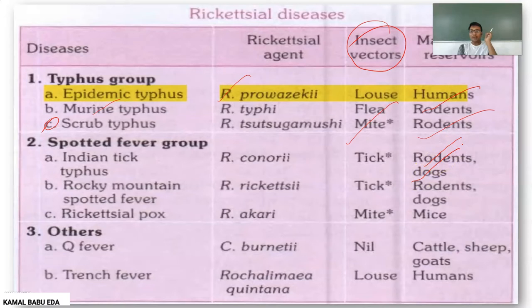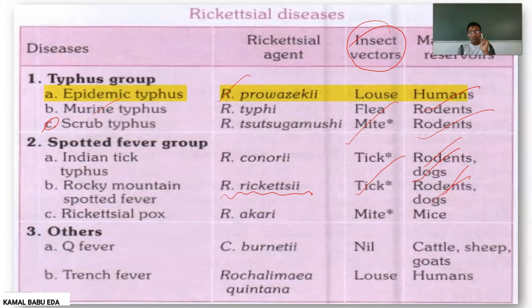Rocky Mountain Spotted Fever is caused by Rickettsia rickettsii; the insect vector is tick and the mammalian reservoirs are rodents and dogs. The last one in the Spotted Fever group is Rickettsialpox, where the rickettsial agent is Rickettsia akari, the insect vectors are mites, and the mammalian reservoirs are mice.